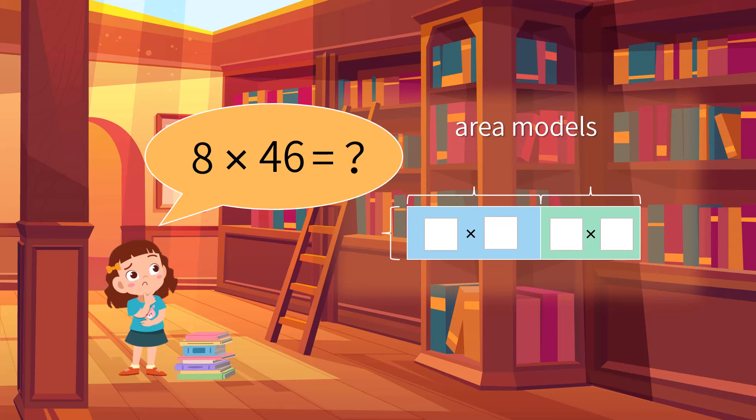We first need to divide the number into the expanded form, which means we need to assign digits to their place values. For number 46, we have 4 tens and 6 ones, thus it can be divided into 40 plus 6.